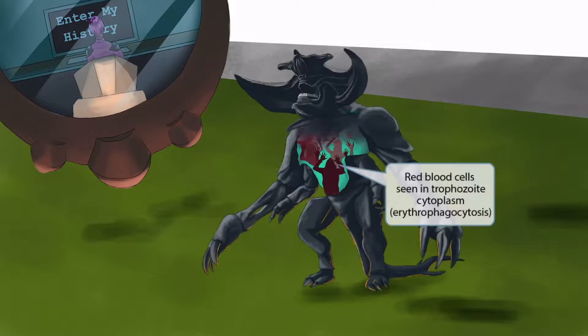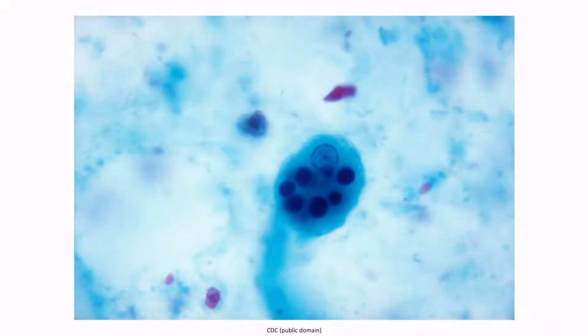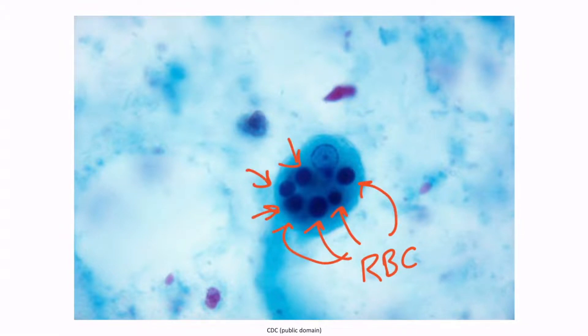Now the planet is being ravaged by this large monster that eats everyone. You can see that it's even eaten some of her people. Look at those red people in the translucent monster belly. These red people represent red blood cells seen in the cytoplasm of trophozoites. Another term for this concept is erythrophagocytosis, or eating of red blood cells. Here's a microscopic image of an Entamoeba trophozoite — it actually has several of those little RBCs that it gobbled up. This is classic Entamoeba histolytica.